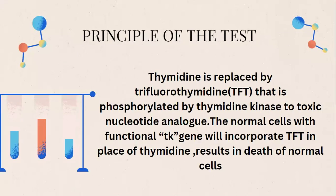The principle of the Mouse Lymphoma Assay is that thymidine already present in the mouse lymphoma cell is replaced by trifluorothymidine (TFT), a chemical that is phosphorylated by thymidine kinase to a toxic nucleotide analogue. Normal cells with a functional TK gene will incorporate TFT in place of thymidine, which results in the death of those normal cells.